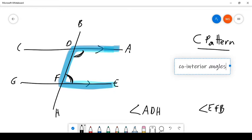Now, I know that some of you are going to immediately look at the other lessons and say, does that mean angle ADH must equal angle EFB? And the answer is no, they don't equal each other. The C pattern is a different rule. So the C pattern tells us that the two angles on the interior part of the C must add up to 180 degrees. Co-interior angles must add up to 180 degrees.